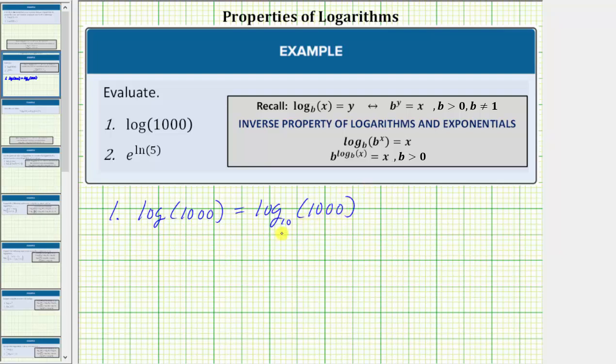If we can write 1,000 with base 10, then we can use this first property to simplify the expression. Well 1,000 is equal to 10 times 10 times 10 which equals 10 raised to the power of three or 10 cubed.